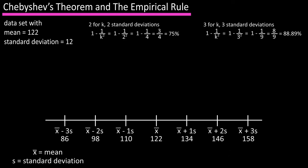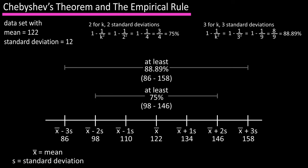With what we computed earlier, we know that at least 75 percent of all values in the data set will lie within two standard deviations of the mean. So in this example, 75 percent of all values lie between 98 and 146, and at least 88.89 percent of all values lie between 86 and 158, which is three standard deviations from the mean. Keep in mind this theorem applies to any distribution regardless of its shape.